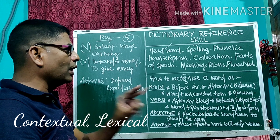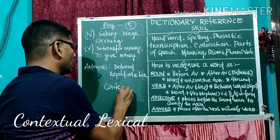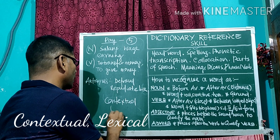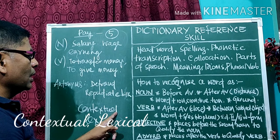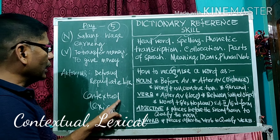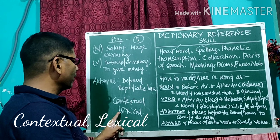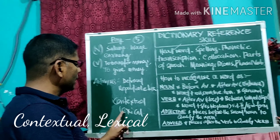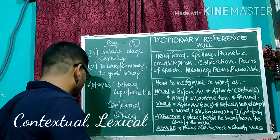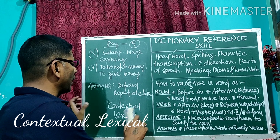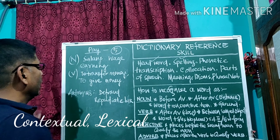Besides this, there are two types of meaning for a word. One is contextual and the other is lexical. Contextual means the word is used in a particular context. Lexical is the word's meaning as given in the dictionary. Here, we will discuss about the lexical meaning of a word, which we can get in the dictionary.